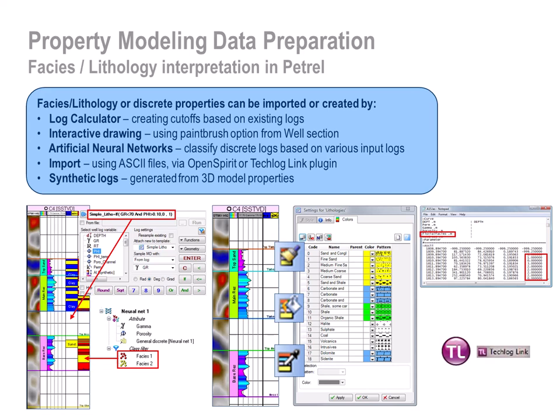Calculator: the calculator can be used to set an expression such as if the gamma ray log's values are less than a certain value then set facies to sandstone, otherwise set facies to shale.